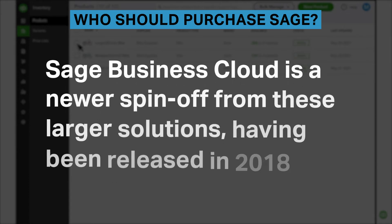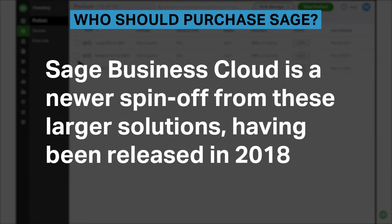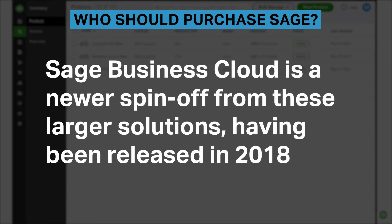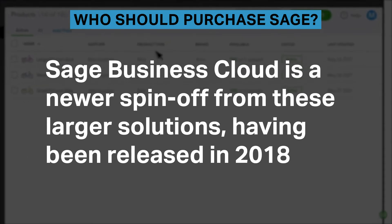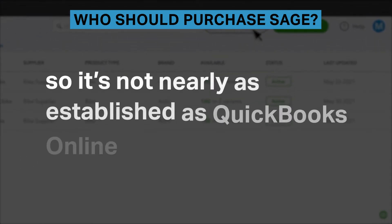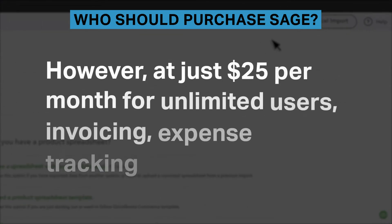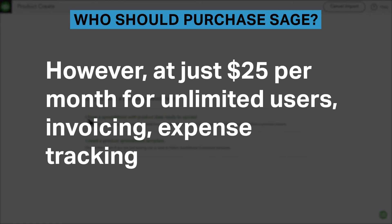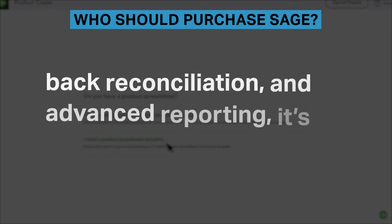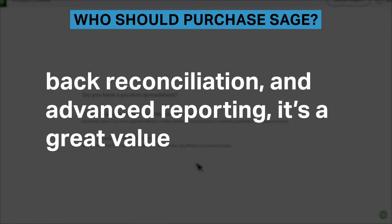Sage Business Cloud is a newer spinoff from these larger solutions, having been released in 2018, so it's not nearly as established as QuickBooks Online. However, at just $25 per month for unlimited users, invoicing, expense tracking, bank reconciliation, and advanced reporting, it is a great value.